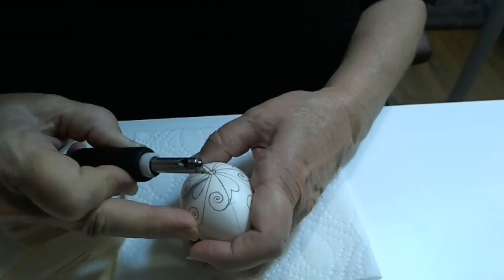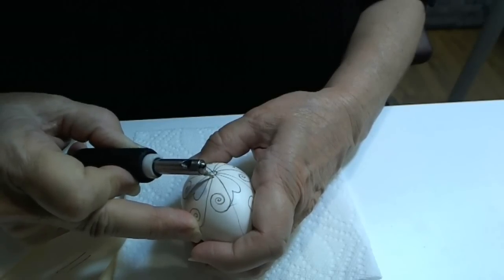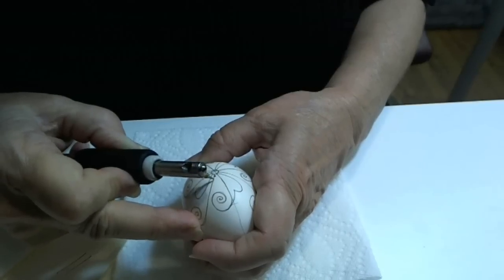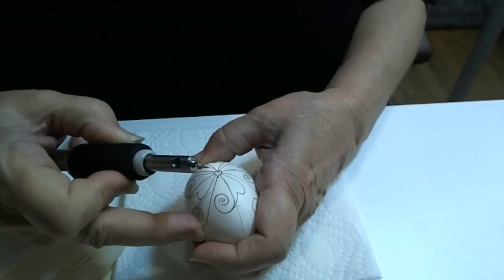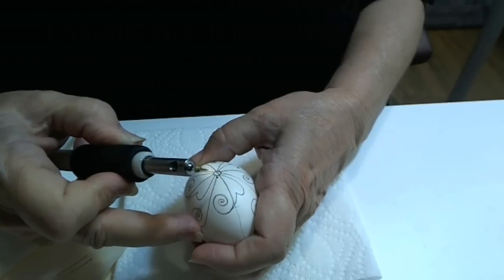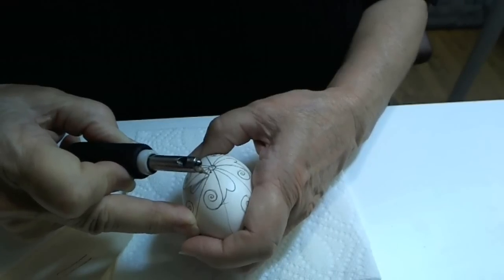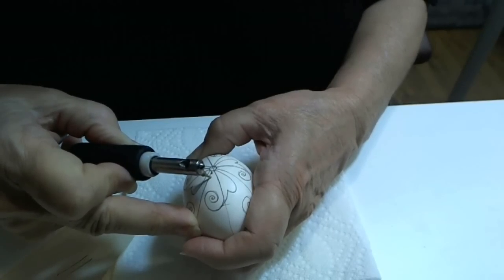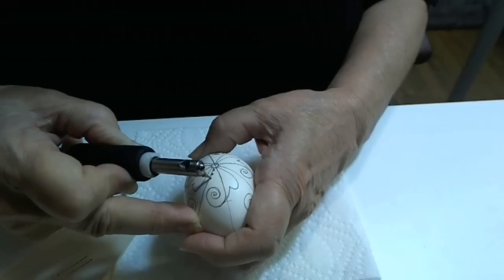To do this so that they really look like dots, make little circles. Don't just go dot, dot, dot. What happens is you get little slash lines and they're all different sizes, where if you're making the circle motion, you get more of a uniform look.